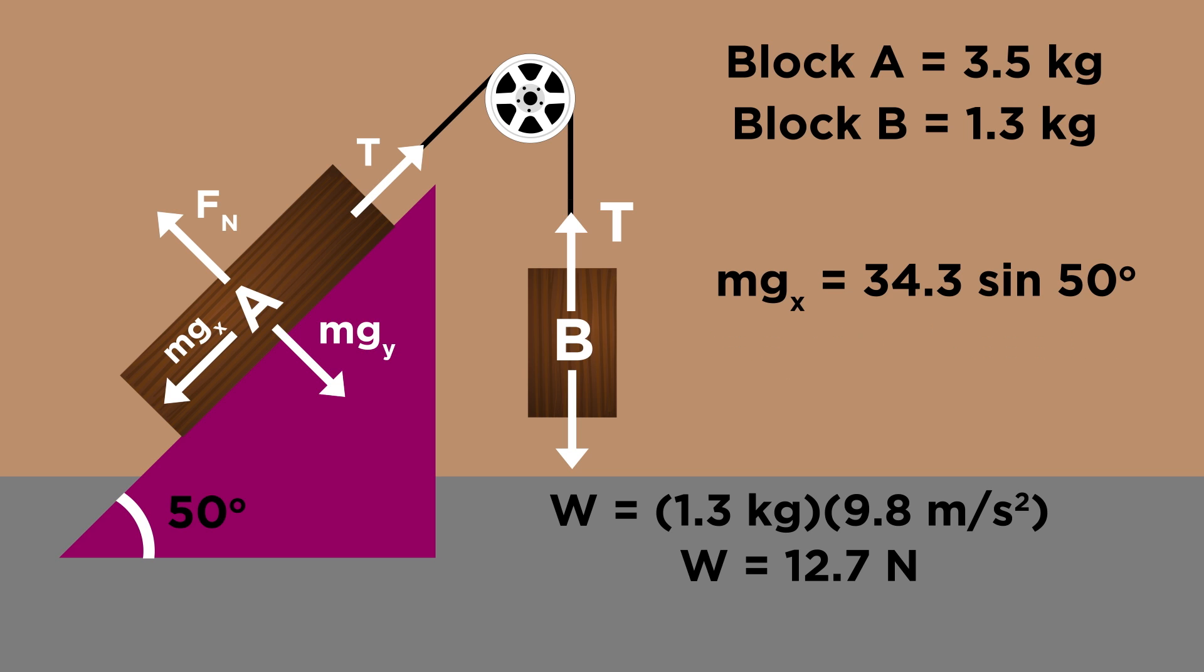34.3 times the sine of 50 gives us 26.3 newtons, and we don't care about the perpendicular component, as that and the normal force will just cancel each other out.